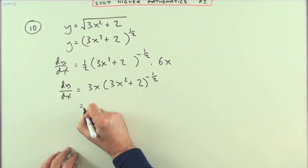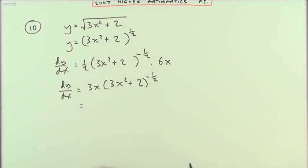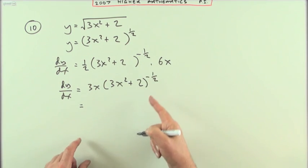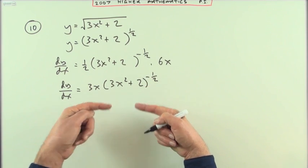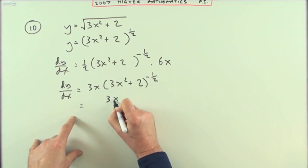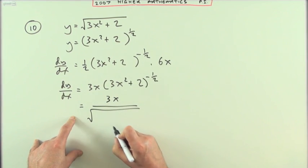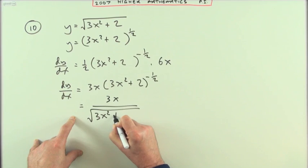I'm going to put it back the way that I found it, though, because I found it in root form. So I've got the root form here. That's the square root again. The negative tells me this portion is underneath. So I've got 3x over the square root of 3x squared plus 2.